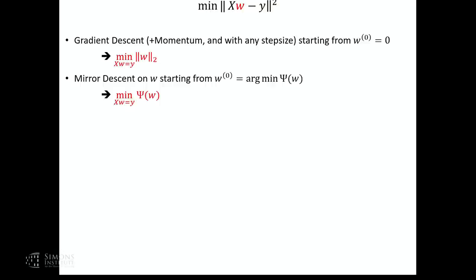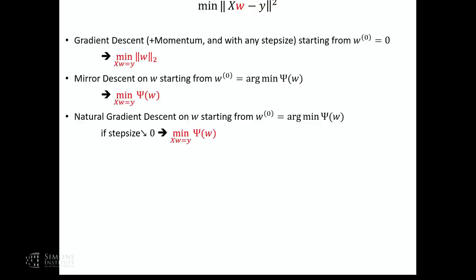You can show the iterates lie in some manifold, and intersecting that manifold with global optimality gives KKT conditions for this optimization problem. What about natural gradient descent? At least if the step size goes to zero, natural gradient descent is the same as mirror descent, so it'll go to the same thing. But here we already see we have to take the step size to zero. With finite step sizes, what you converge to depends on your step sizes.